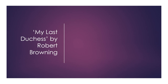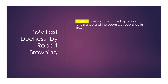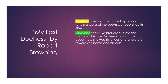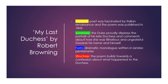My Last Duchess by Robert Browning. The poet was fascinated by the Italian Renaissance and the poem was published in 1842. It was based on a real duke, so if you have a chance do look that up. The duke is proudly displaying the portrait of his late duchess and comments about how she was flirtatious and ungrateful towards him, his name, and himself. The form is a dramatic monologue written in iambic pentameter and the structure builds towards a confession about what happened to the duchess.